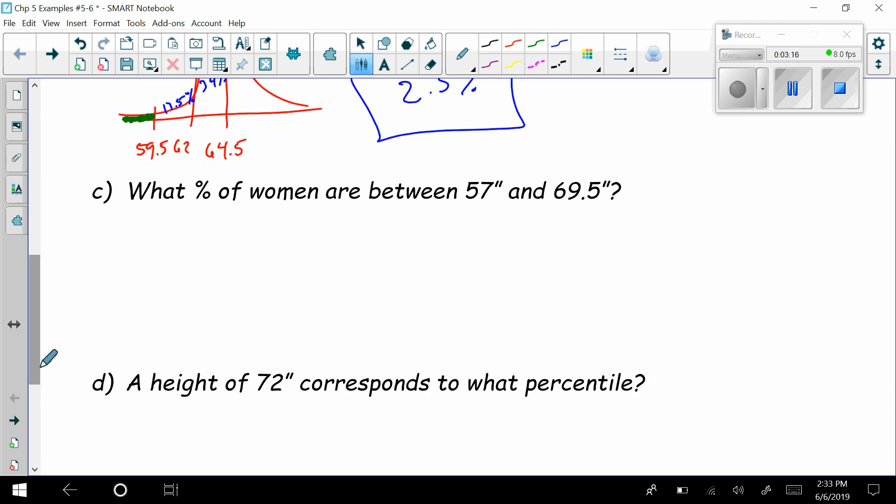On to C. It says what percentage of women are between 57 inches and 69.5. Again, we have to draw a curve for each one of these. So we draw a little curve. And this is at 64.5. We just did this one is at 62. We know this one's at 59.5. We're not far enough. We keep going. We get 57. We've hit that number.